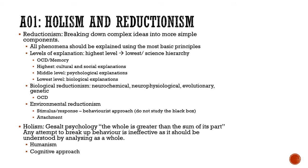For evolution, you can talk about mate preferences — younger women and older financially wealthy men, and why everyone wants kind and intelligent mates. It's all about ensuring survival and passing on genetics. For genetics, you can also discuss genes as looked at with OCD. Please return to the biological approach to refresh your knowledge of the biological explanation of OCD. The more you know in detail, the less you have to remember for individual topics.